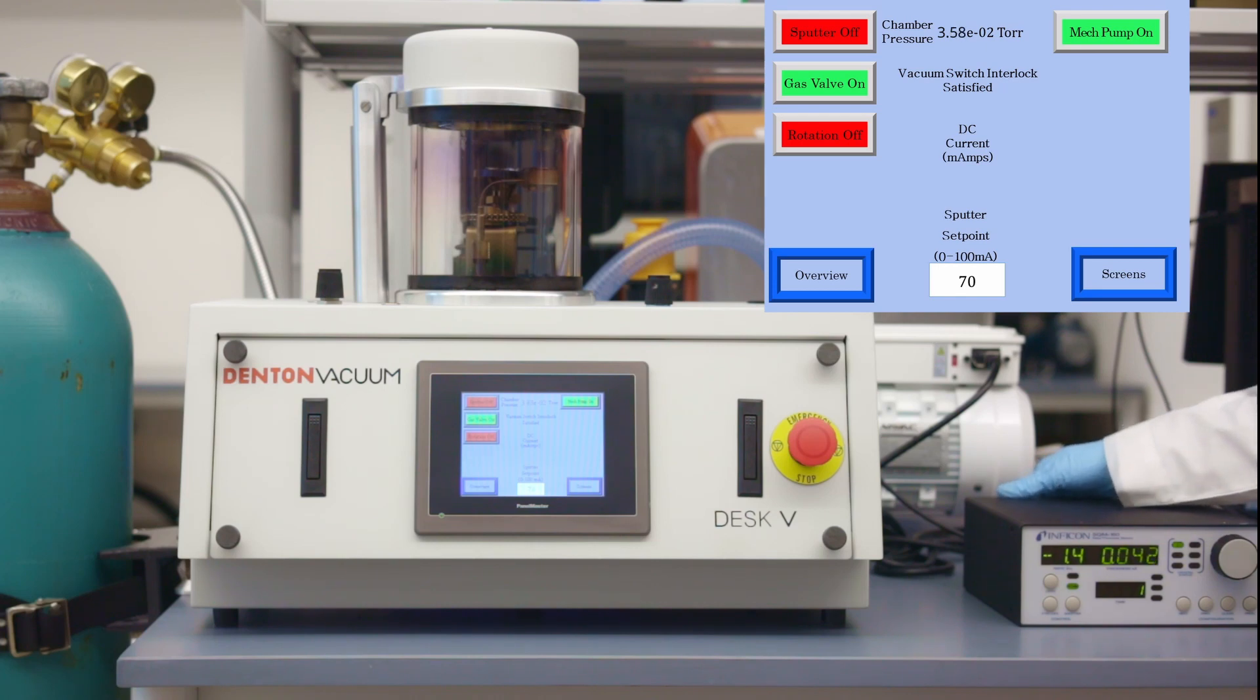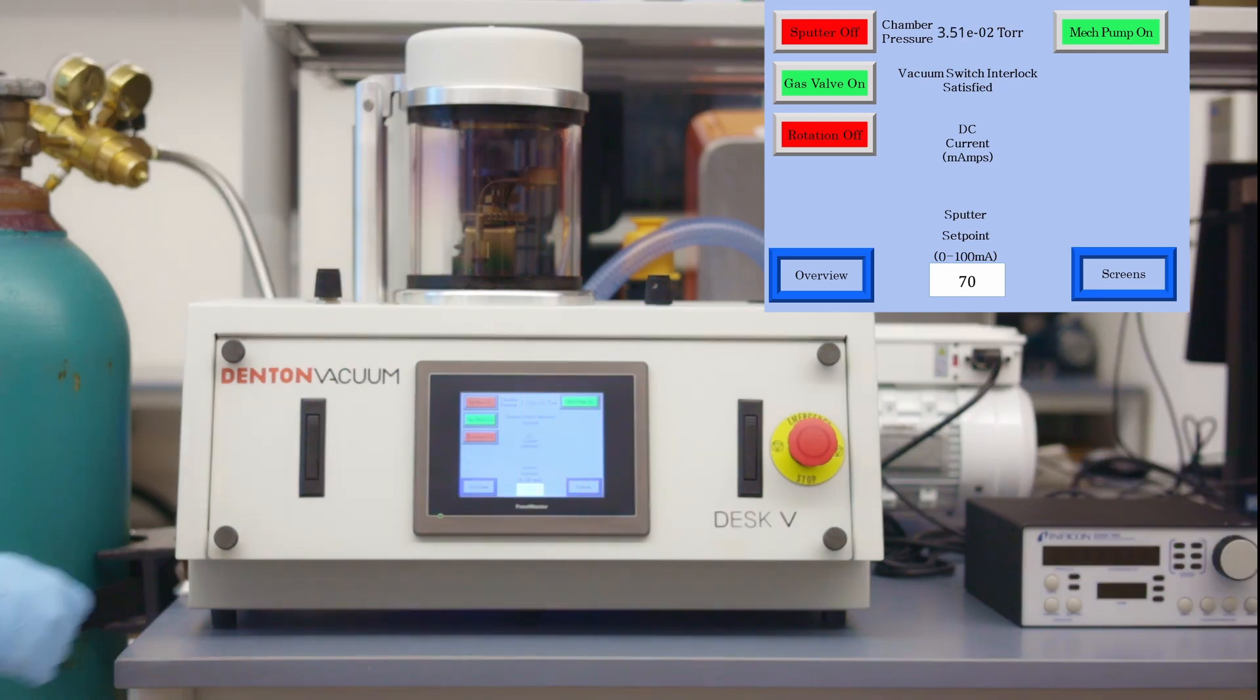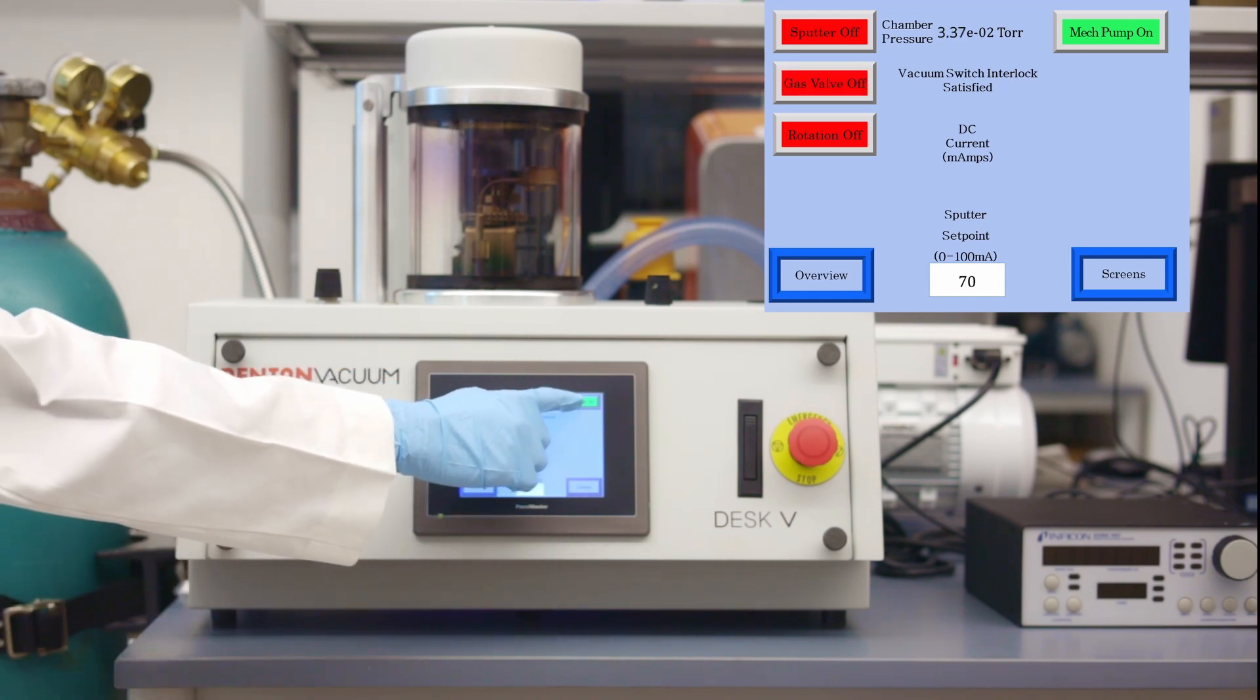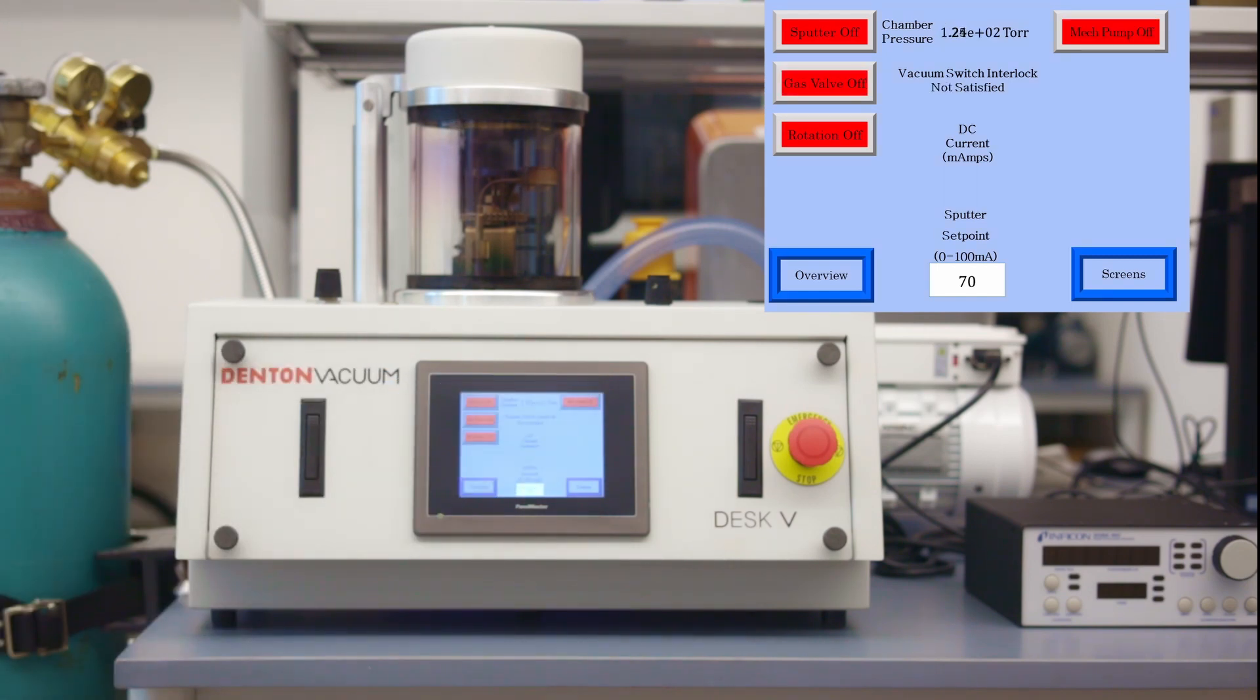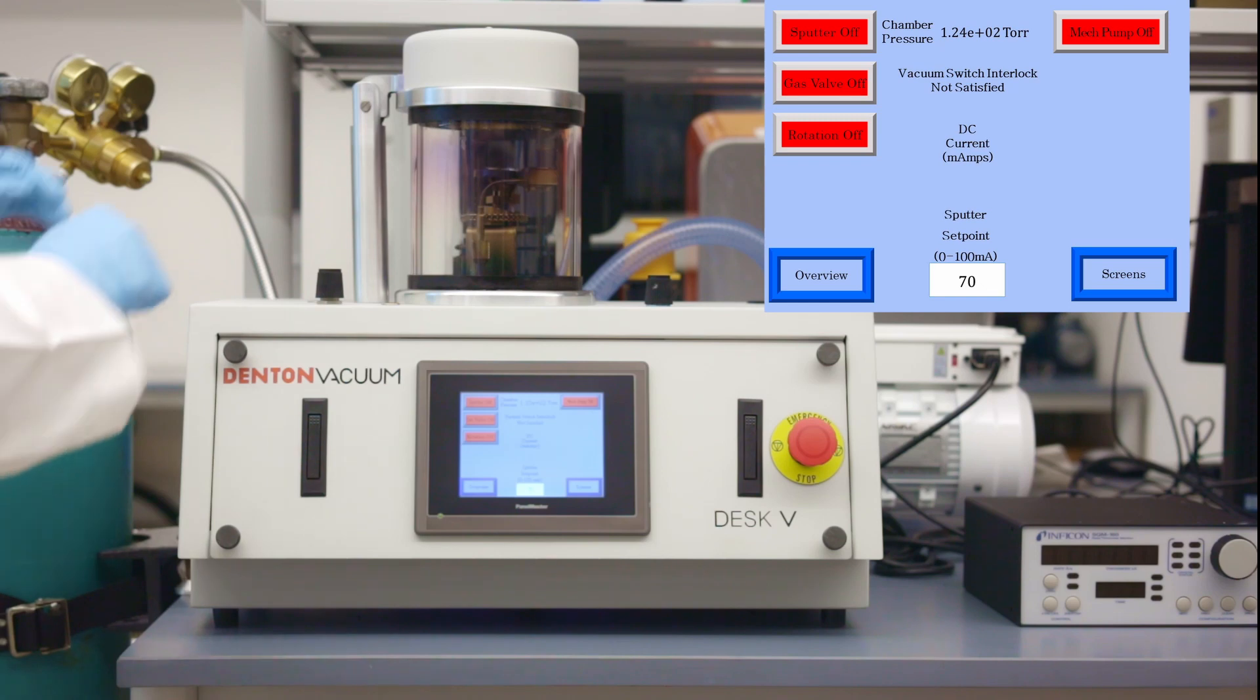Turn off the thickness monitor by toggling the power switch on the back. Now tap gas valve on. Tap mechanical pump on. Wait until the pressure inside the glass jar reaches room pressure or once the hiss noise is no longer heard.